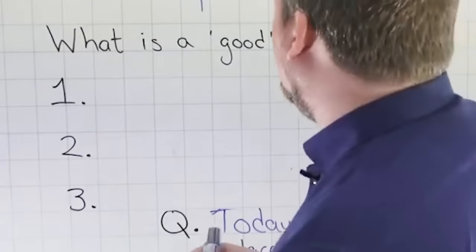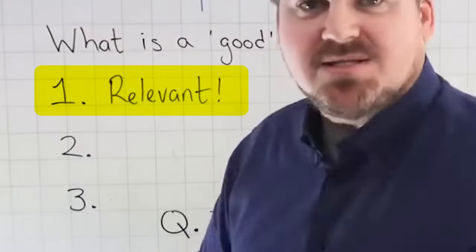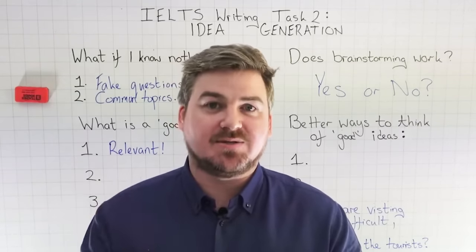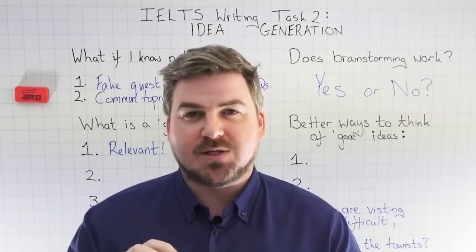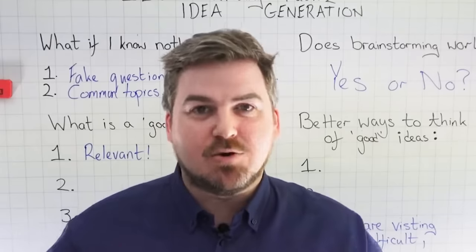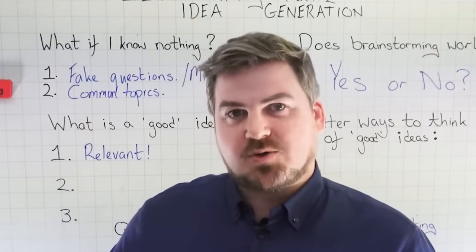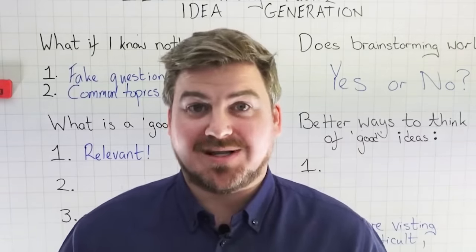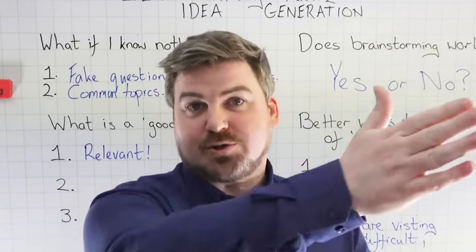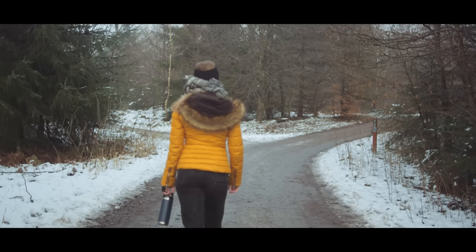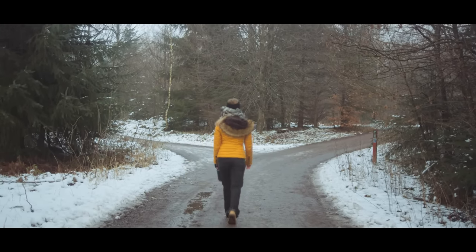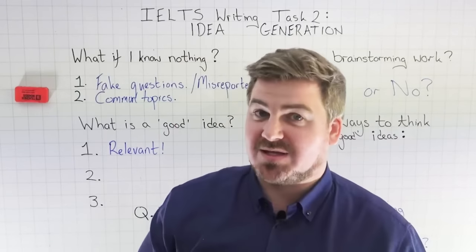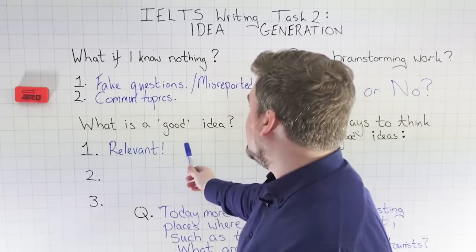So what is a good idea? The first and most important criterion: it has to be relevant to the question. If it is not relevant to the question, it is not going to answer the question. The number one thing you must do is answer the question. If you have irrelevant ideas, you're not going to answer the question and you're likely to get a band five for task achievement. If you use irrelevant ideas, you're going off on a tangent — writing about something completely unrelated to the topic. So make sure your ideas are relevant.